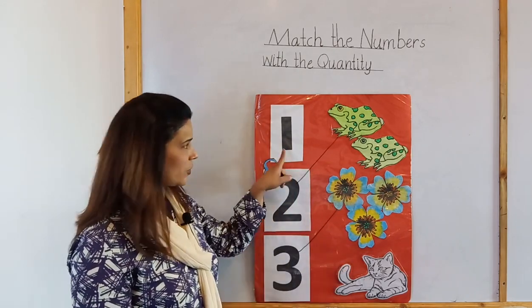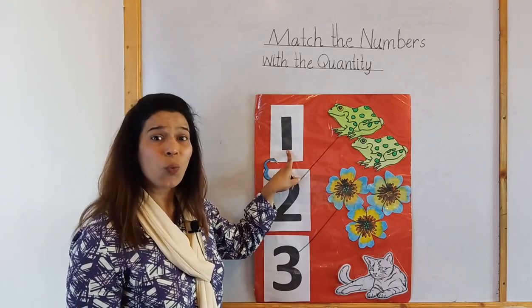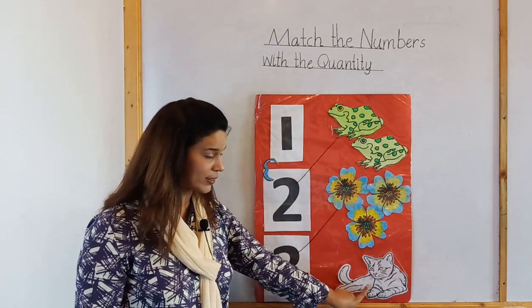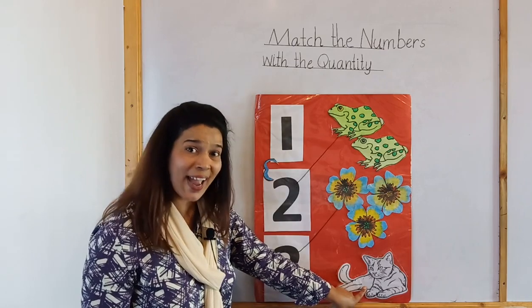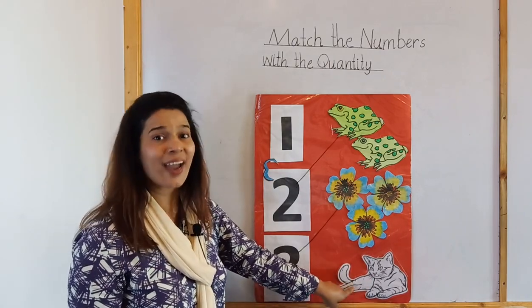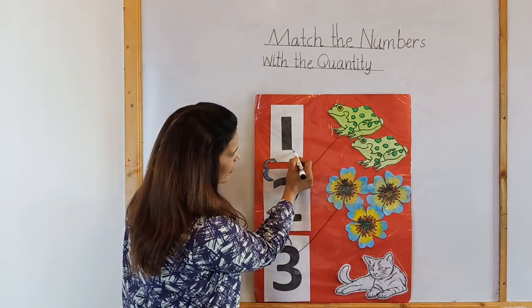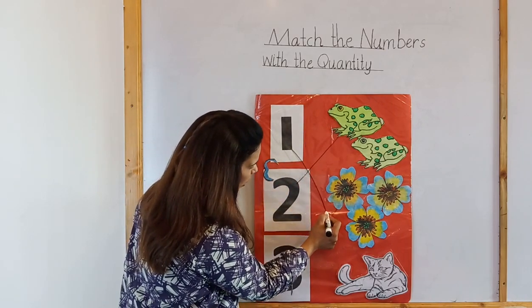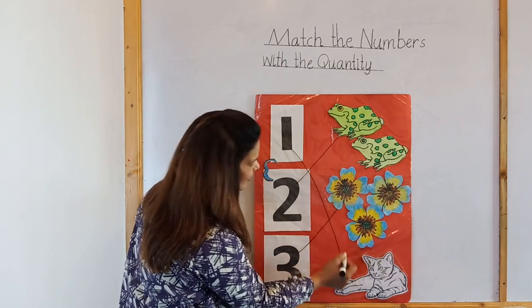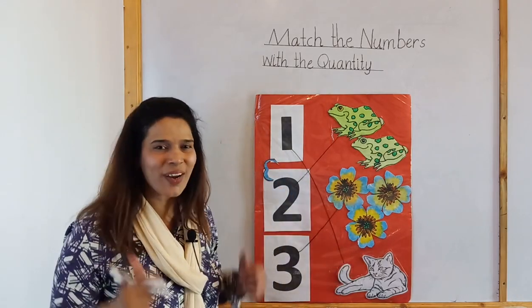Now which number is this? Number 1. And what is this? 1 cat. This is 1 cat. Now let's match number 1 with 1 cat. Very good.